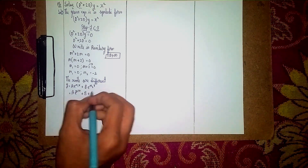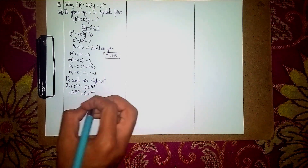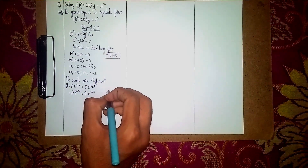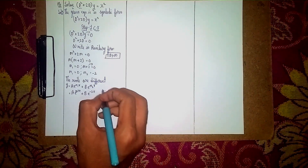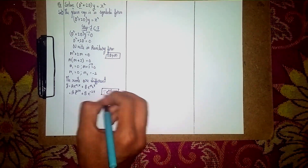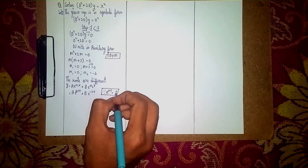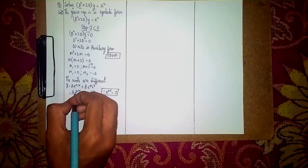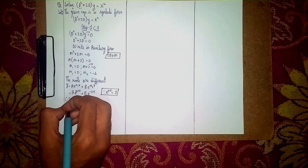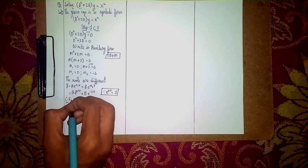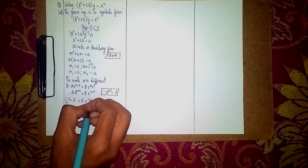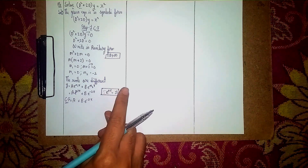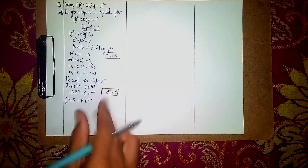Substituting m₁ = 0 and m₂ = −2: y = A·e^(0·x) + B·e^(−2x). Always remember e^0 = 1. So our Complementary Function is: CF = A + B·e^(−2x). Step 1 is now complete.